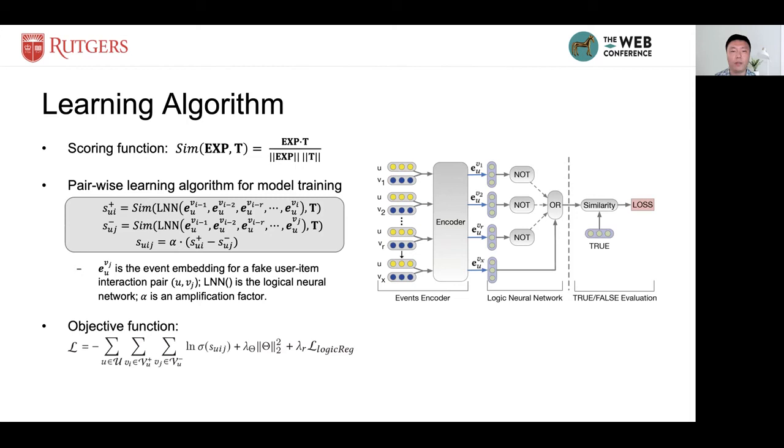The final output vector is the vector which represents the encoded logical expression. We calculate the cosine similarity between logical expression vector and the T vector. The similarity score is treated as the score for current logical expression.